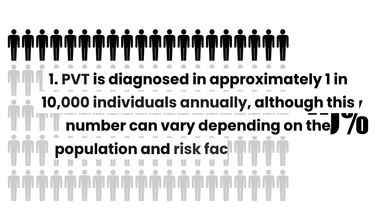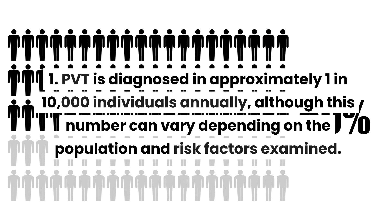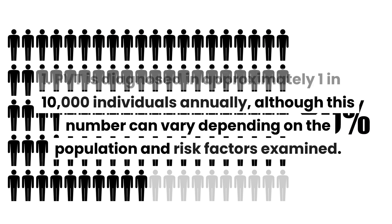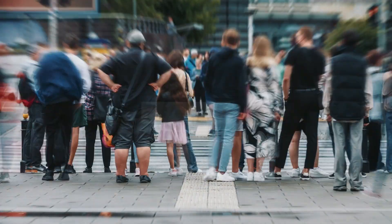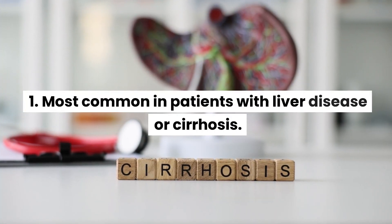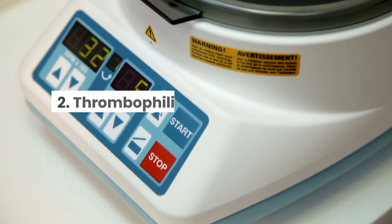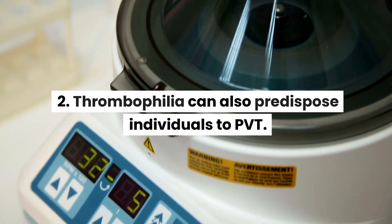Statistics: PVT is diagnosed in approximately 1 in 10,000 individuals annually, although this number can vary depending on the population and risk factors examined. Five facts: one, PVT is most common in patients with liver disease or cirrhosis. Two, thrombophilia can also predispose individuals to PVT.